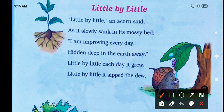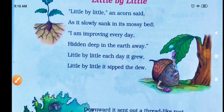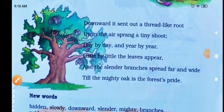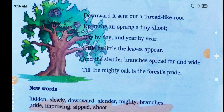'I am improving every day' — then from its mossy bed it slowly improves every day. 'Hidden deep in the earth away' — the seed is planted in the soil, dug into the ground below. Then little by little it grows. 'Little by little it sips the dew' — it is given a little water, or the dew drops fall on it, and it slowly begins to grow.